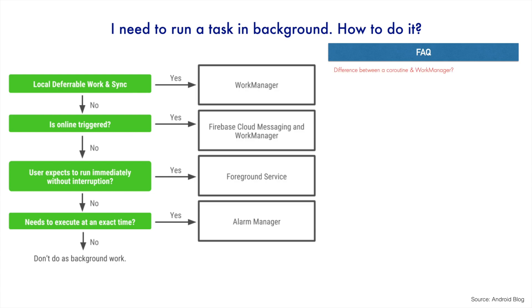You might be wondering about the difference between a coroutine and work manager. A coroutine works only when the app is running, whereas work manager gets executed when a particular criteria is met — for example, when Wi-Fi is available. The device won't be woken up to run a coroutine. That is the key difference between a coroutine and a work manager.